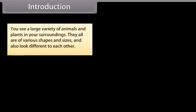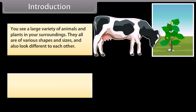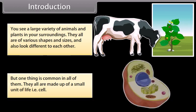You see a large variety of animals and plants in your surroundings. They all are of various shapes and sizes and also look different to each other. But one thing is common in all of them — they all are made up of a small unit of life, that is the cell. In this module we are going to learn about cell and its structure.